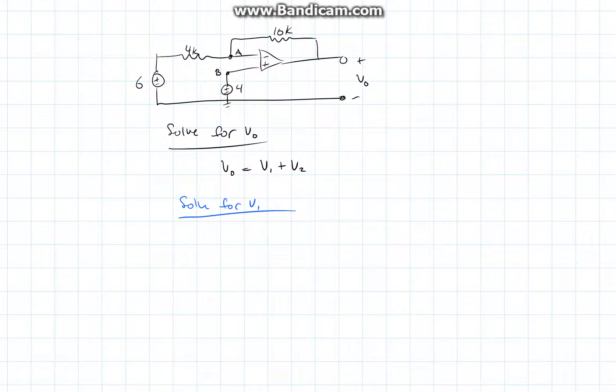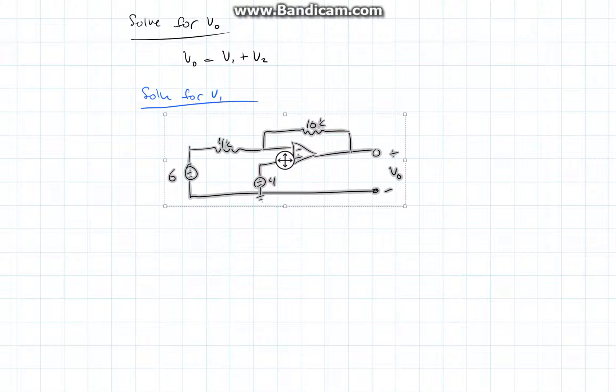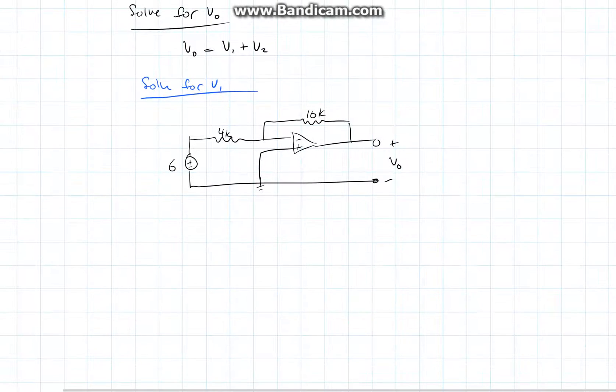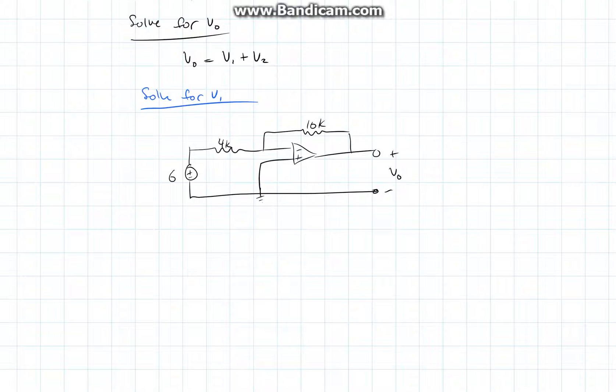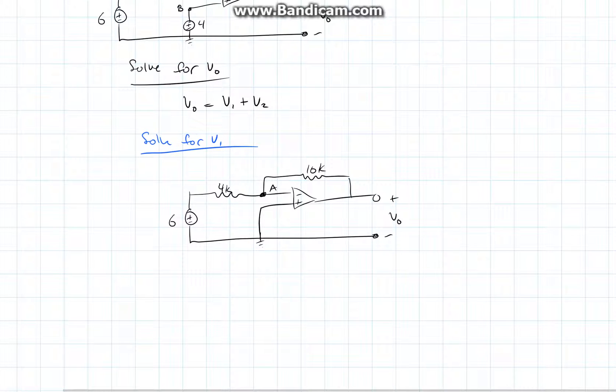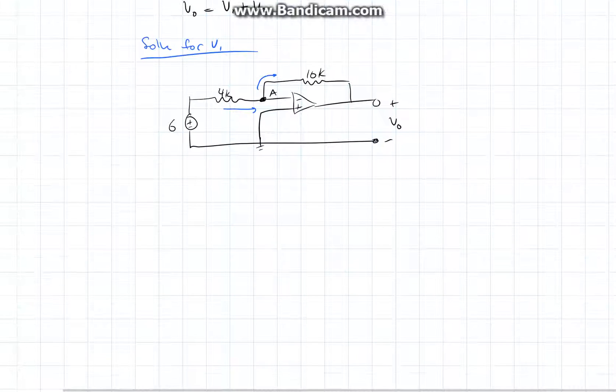In order to solve for V1, we must consider the circuit without the 4-volt power source. Now that we have the circuit drawn, we can apply KCL to node A. Considering the currents in this direction, we'll produce the following equation.